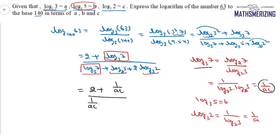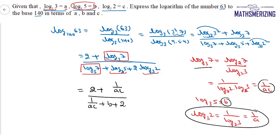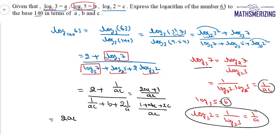So the denominator is 1 upon ac plus b plus 2 times 1 over a. Taking LCM of ac for the numerator gives 2ac plus 1 over ac. For the denominator, taking LCM of ac gives 1 plus abc plus 2c over ac. The ac cancels, so the final answer is (2ac + 1) upon (abc + 2c).